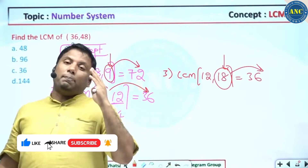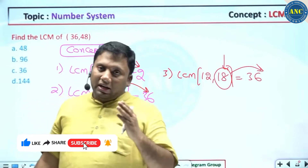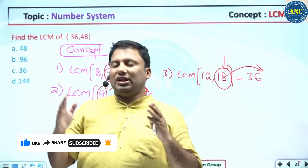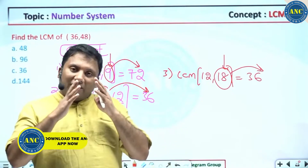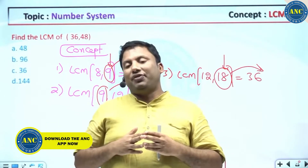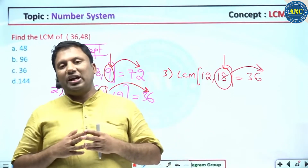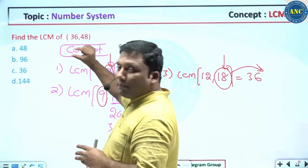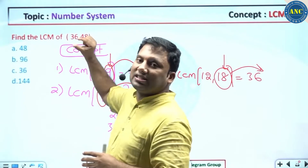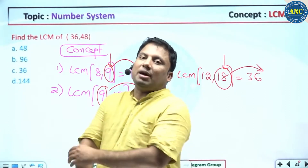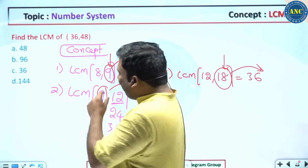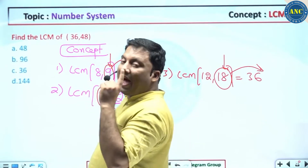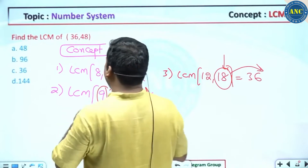Why does this happen? Any number multiplied by 9 has a digital sum of 9. 9 × 4 = 36, and 3 + 6 = 9. 9 × 5 = 45, and 4 + 5 = 9. 9 × 8 = 72, and 7 + 2 = 9. So if one number has digital sum 9, the answer's digital sum should also be 9.